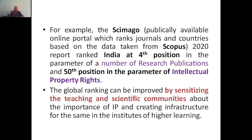Scimago is one of the publicly available online portals which ranks journals and countries based on data taken from its corpus. Now, the 2020 report shows India at the fourth position in the parameter of number of research publications. But at the same time, in the parameter of intellectual property, we were at the fifth position — there is a huge difference.